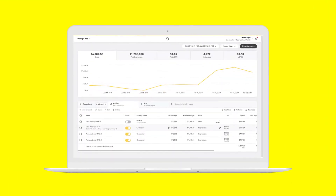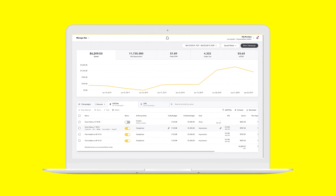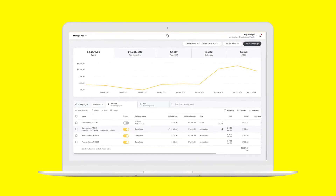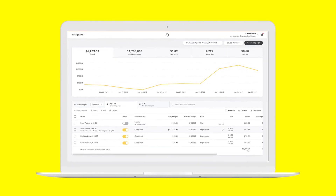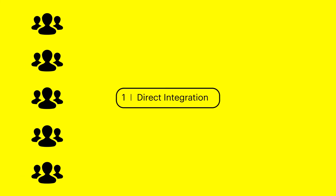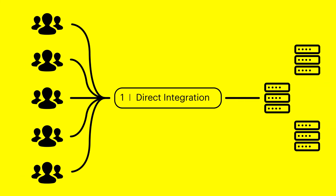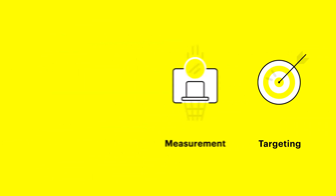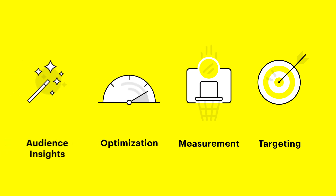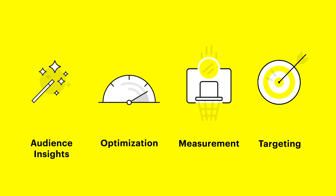Implementing the Conversions API will help you accurately measure and monitor performance of your Snapchat campaigns. This direct data integration will help you manage future privacy changes with more ease and have compatibility with all of our existing features such as targeting, measurement, optimization, and audience insights.